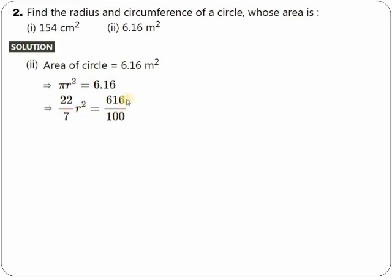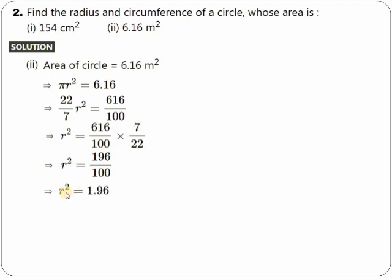The value of pi is 22/7, and 6.16 can be written as 616/100. So we take 7 here and bring 22 down. Simplify and do the cancellation. After further simplification, r² is obtained as a decimal value. To get r, you have to put a square root sign. Square root of 1.96 gives us r = 1.4 meters.